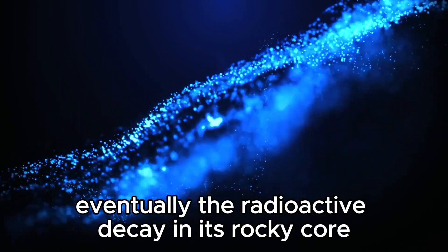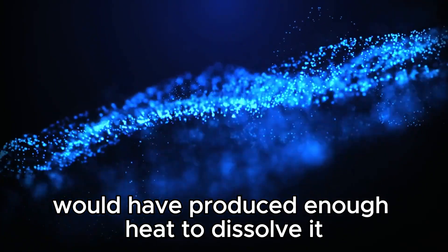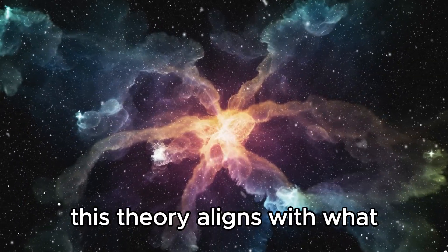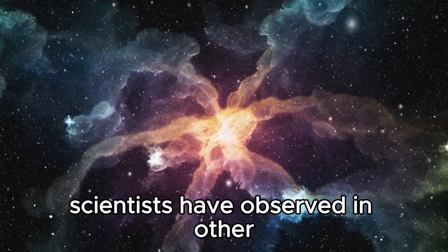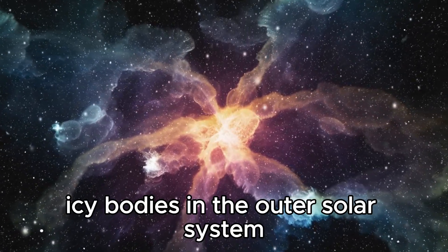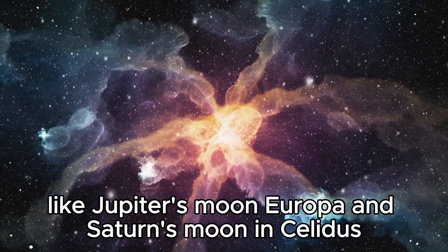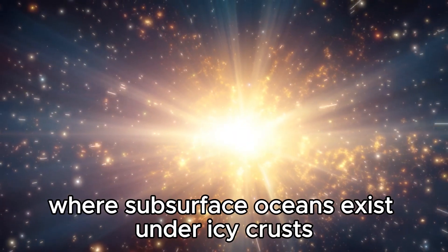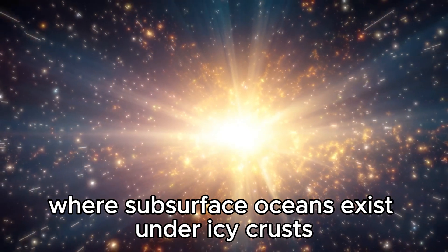Eventually, the radioactive decay in its rocky core would have produced enough heat to dissolve it. This theory aligns with what scientists have observed in other icy bodies in the outer solar system, like Jupiter's moon Europa and Saturn's moon Enceladus, where subsurface oceans exist under icy crusts.